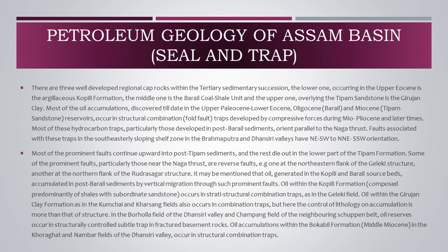There are three well-developed regional cap rocks within the Tertiary sedimentary succession: the lower one occurring in the Upper Eocene as the argillaceous Coppili formation, the middle one is the Barail coal-shale unit, and the upper one overlying the Tipam sandstone as the Girjan clay. Most of the prominent faults continue upward into post-Tipam sediments, and the rest die out in the lower part of the Tipam formation. Some prominent faults, particularly those near the Naga thrust, are reverse faults, e.g., one at the northeastern flank of the Gheleki structure, another at the northern flank of the Rudrasagar structure. Oil generated in the Coppili and Barail source beds accumulated in post-Barail sediments by vertical migration through such prominent faults. Oil within the Coppili formation occurs in strati-structural combination traps, as in the Gheleki field.